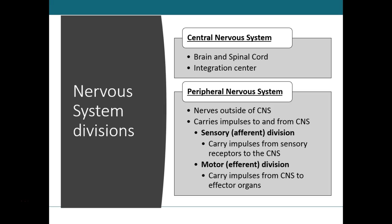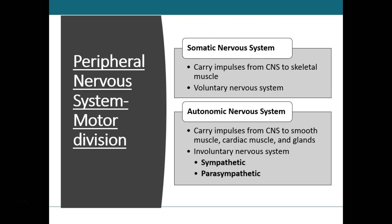Continuing with the peripheral nervous system: we further subdivide it into the somatic and autonomic nervous systems. The somatic nervous system conveys output from the central nervous system to skeletal muscles only, and because skeletal muscles can be consciously controlled, this is sometimes referred to as voluntary. The autonomic nervous system, on the other hand, conveys output to smooth muscle, cardiac muscle, and glands. Because these responses are not under conscious control, the autonomic system is referred to as involuntary. It is comprised of two branches: the sympathetic and the parasympathetic.